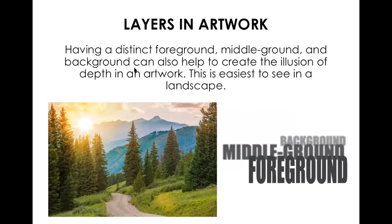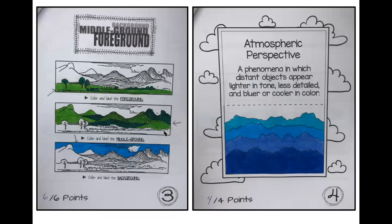We can also use layers in an artwork to create space. We can use a background, a foreground, and a middle ground. For example, the foreground in this photograph would be the trees and the road, the middle ground would be these hills, and then the background would be these hills far away and the sky.